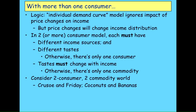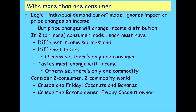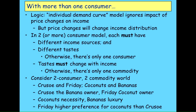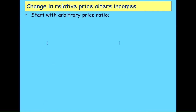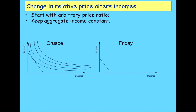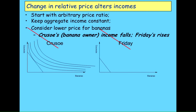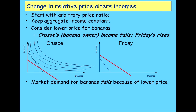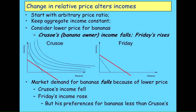Let's say Crusoe and Friday are our two individuals, and coconuts and bananas are our two commodities. Crusoe owns all the banana trees and Friday owns all the coconut trees. Coconuts are a necessity, bananas are a luxury — it's just a simple exchange economy. Friday has a higher preference for coconuts than does Crusoe. Starting with an arbitrary price ratio, you keep aggregate income constant — you don't change the number of coconuts and bananas — and consider a lower price for bananas. Now Crusoe, who owns the bananas, is going to have a drop in his income, and Friday's income therefore rises. So the pivot points don't remain constant. And the market demand for bananas could fall because of the lower price, because Crusoe's income has fallen and Friday's income has risen, but Friday has a lower preference for bananas than Crusoe does.